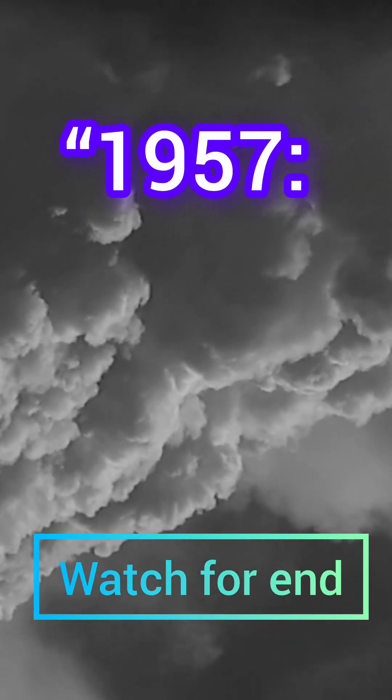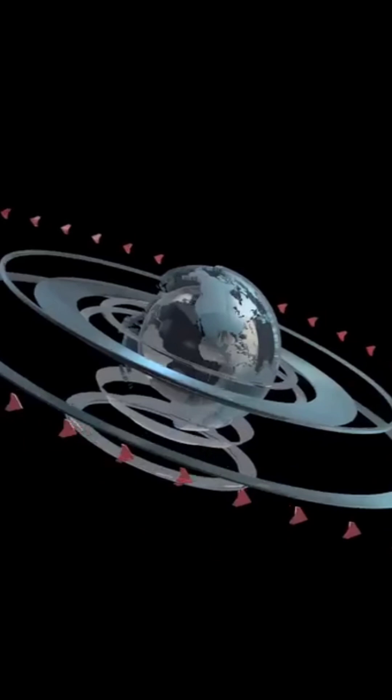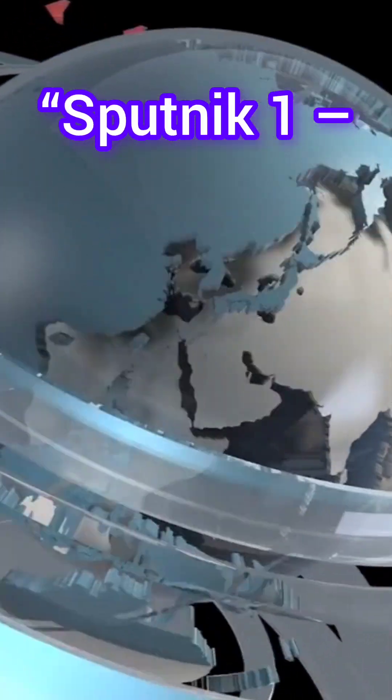October 4th, 1957. The world heard a mysterious beep-beep from the sky. It was Sputnik 1, the very first artificial satellite launched by the Soviet Union.